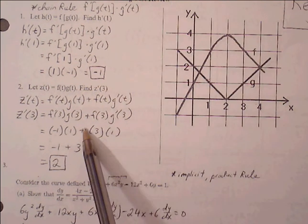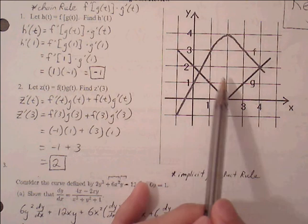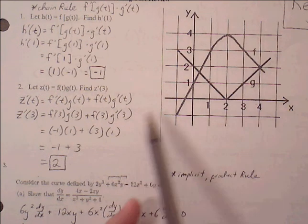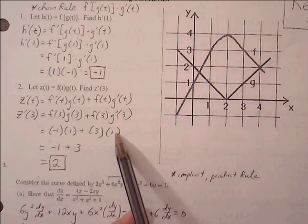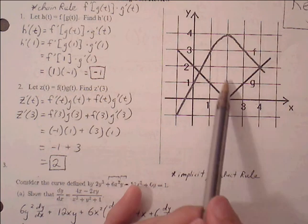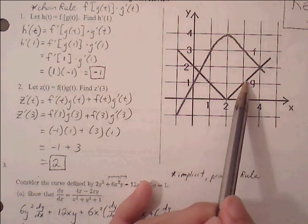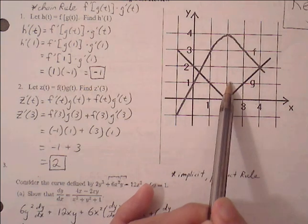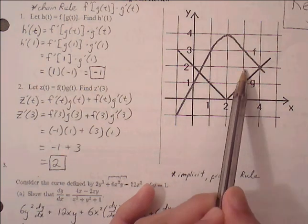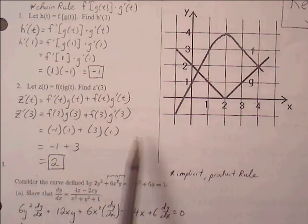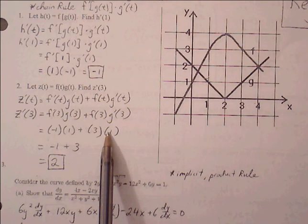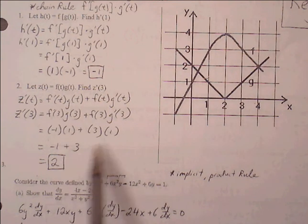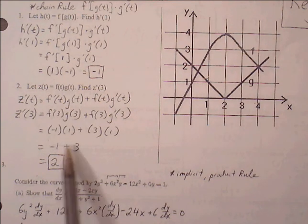Plus f of three — f has a y value of three at x equals three. G prime of three: the slope of this line is always one — up one over one — so slope of one replaces g prime of three. So negative one times one is negative one, plus three times one is three. Negative one plus three is two.